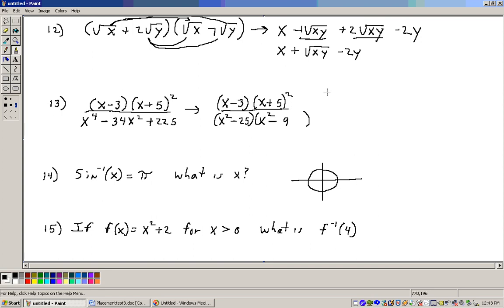On the top we have still that same stuff, x minus 3, x plus 5 squared. And on the bottom we have some difference of two squares. This is a difference of two squares that factors into x plus 5, x minus 5. And this is also a difference of two squares, which factors into x plus 3, x minus 3.